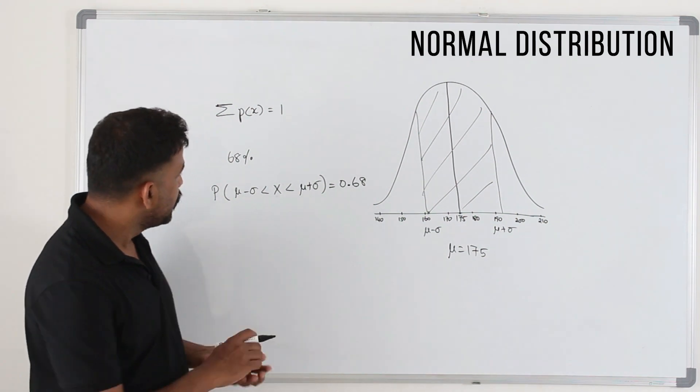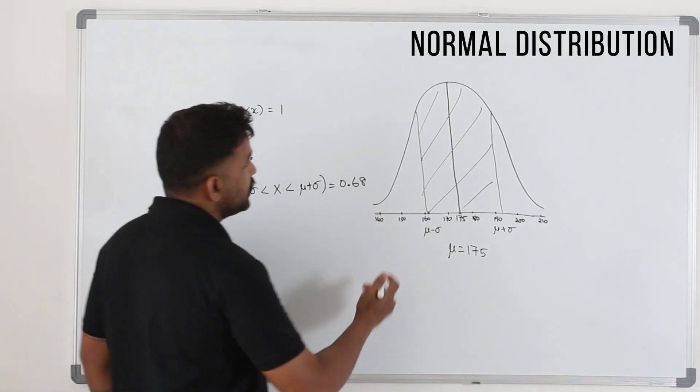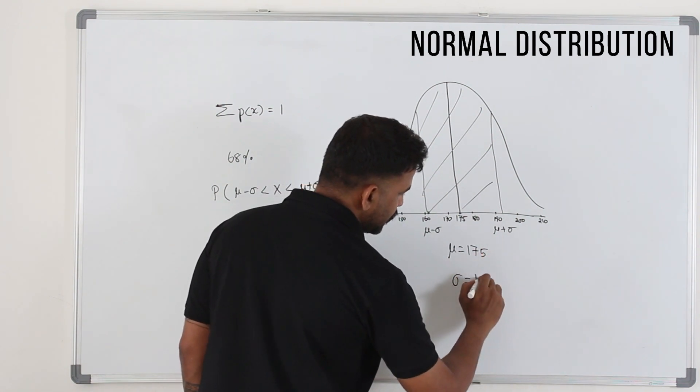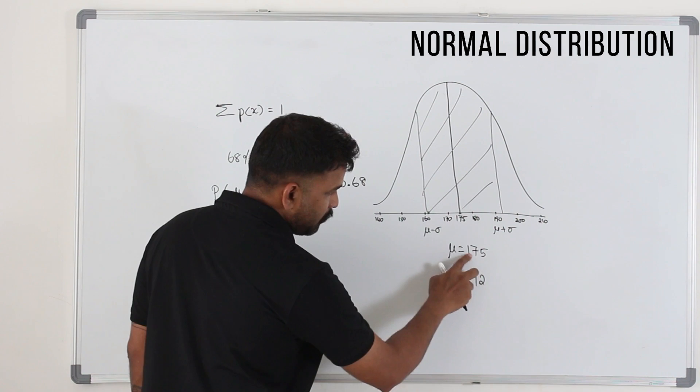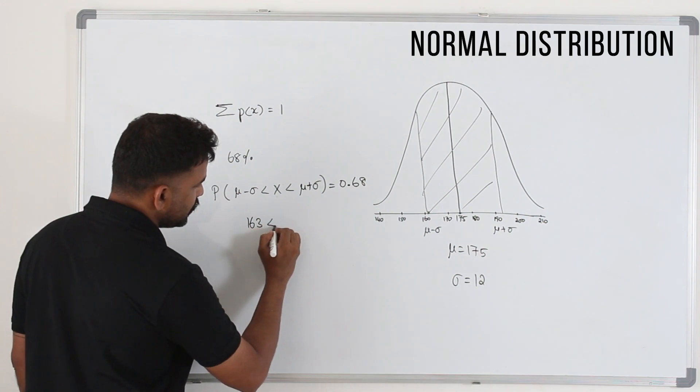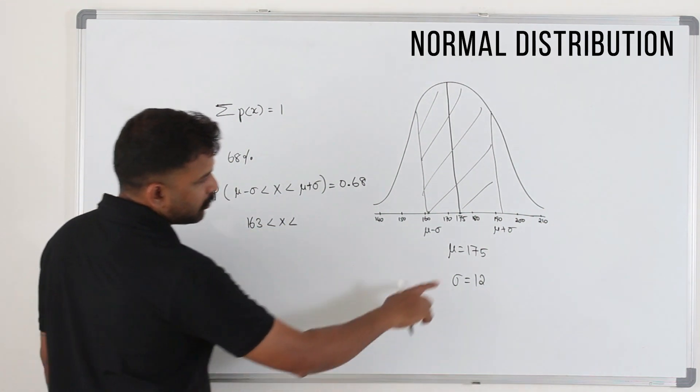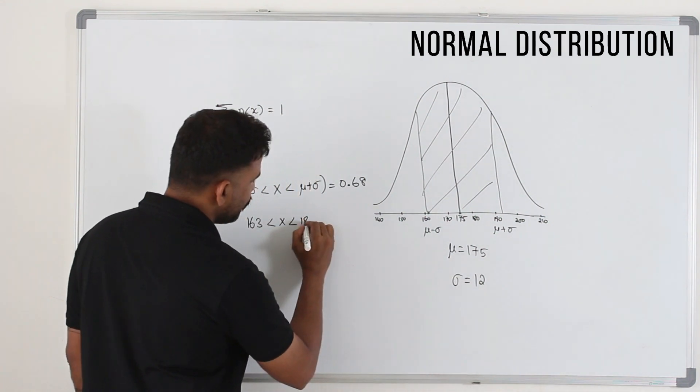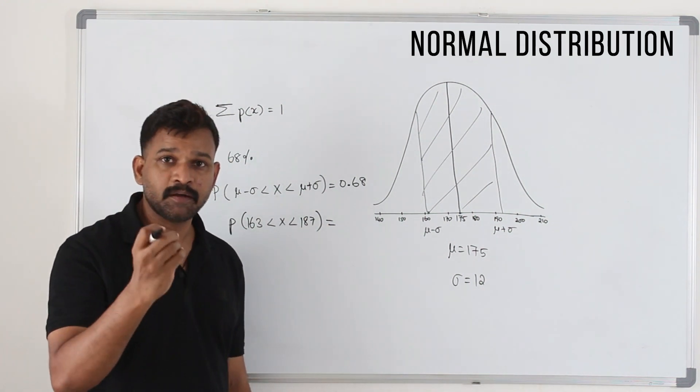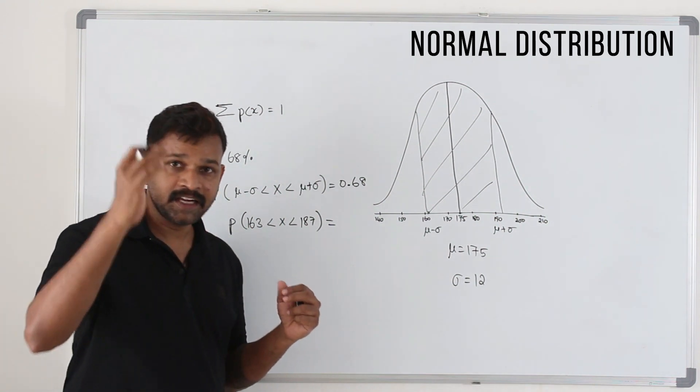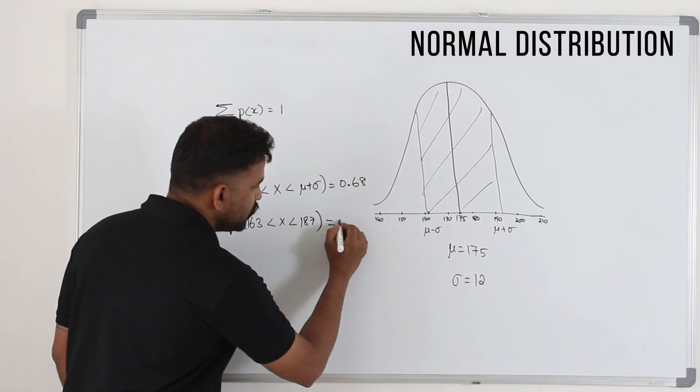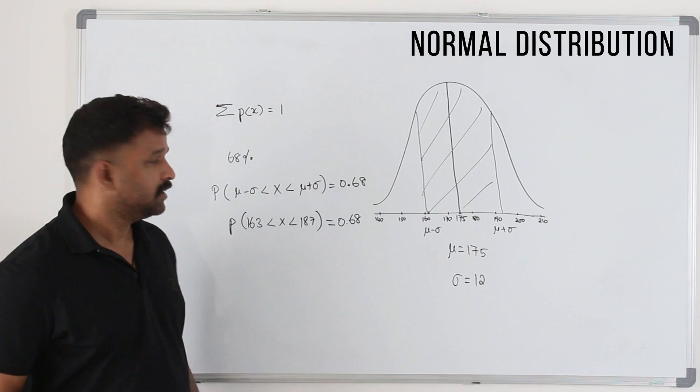What does this mean? Let's say μ is 175 and σ is 12. So μ minus σ is 175 minus 12, which is 163, is less than X is less than μ plus σ, 187. Probability of this means if you select a random person, probability that his height will be between 163 centimeters to 187 centimeters is 0.68. That's what this means.